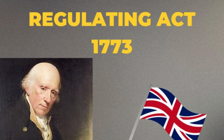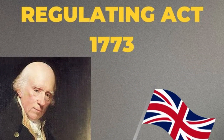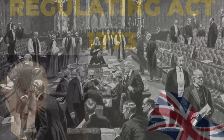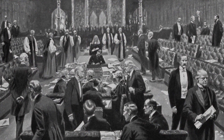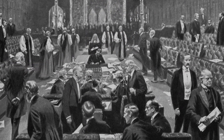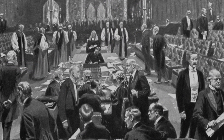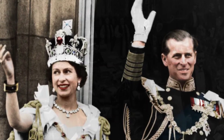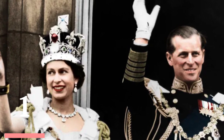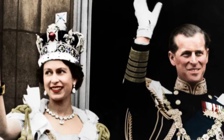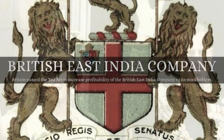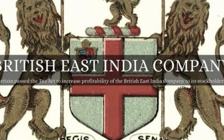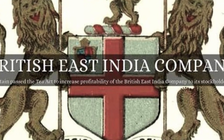The major development is the Regulating Act of 1773. This act was of great constitutional importance, as it was the first step taken by the British government to control and regulate the affairs of the East India Company in India.